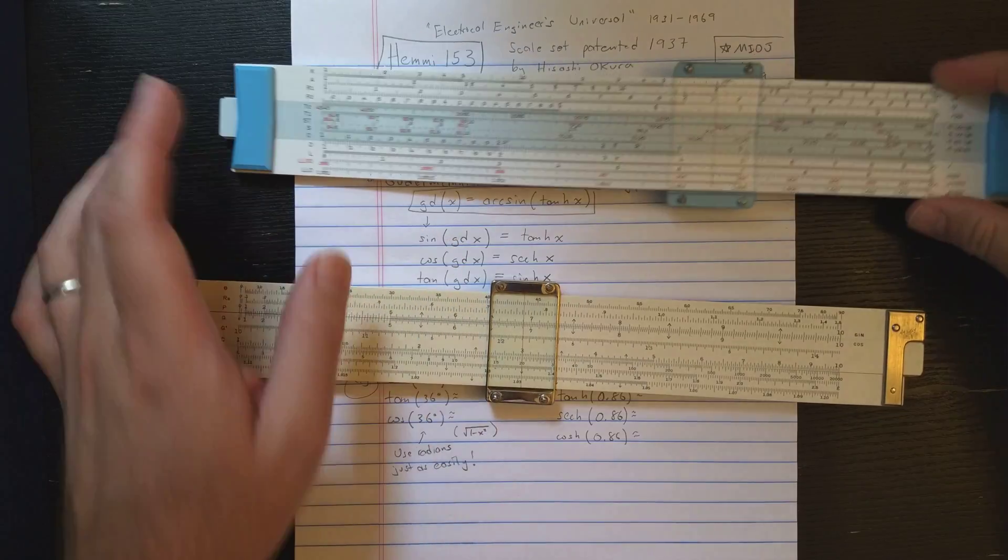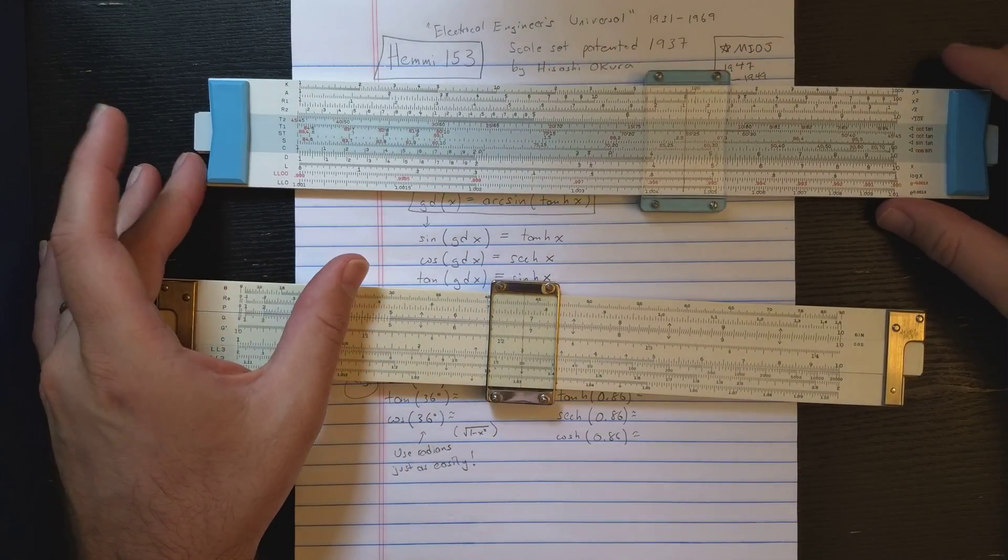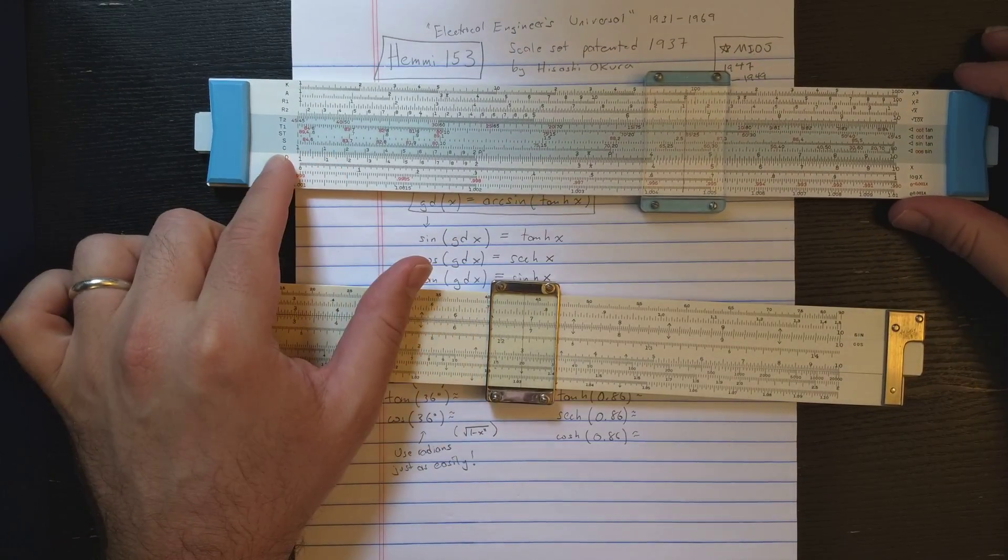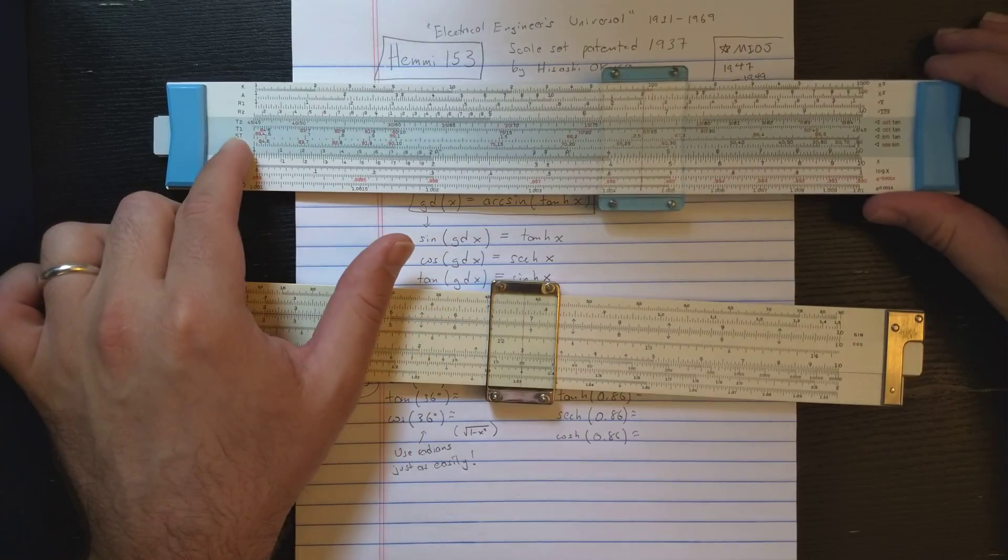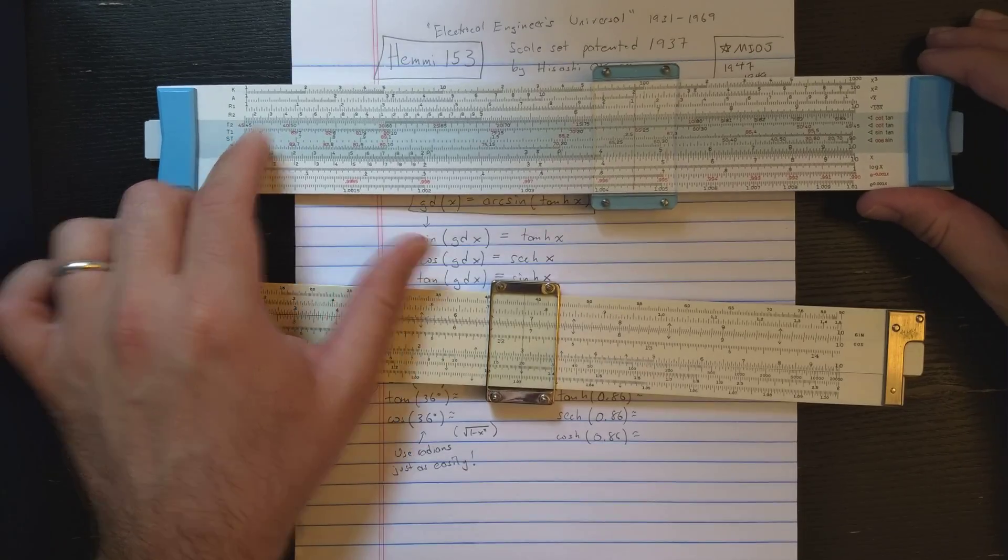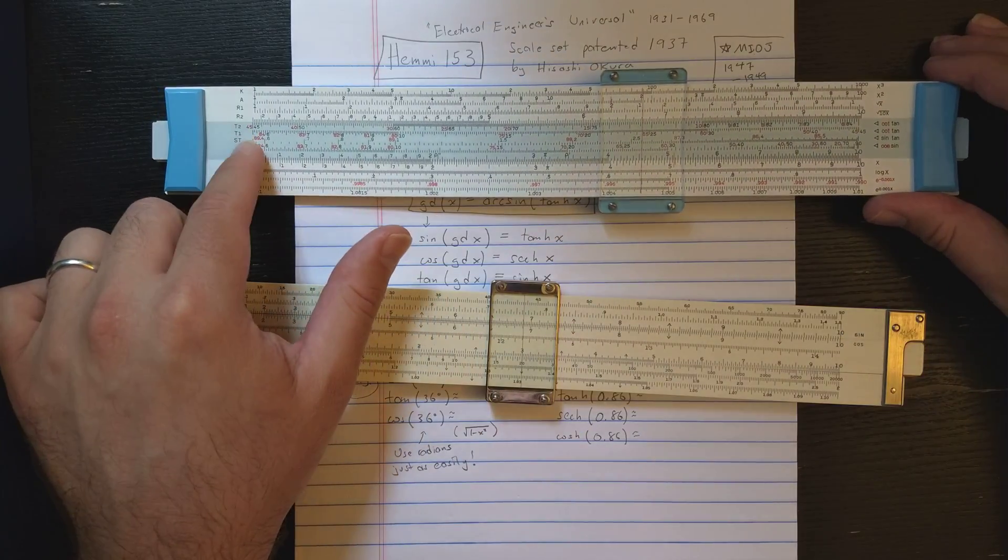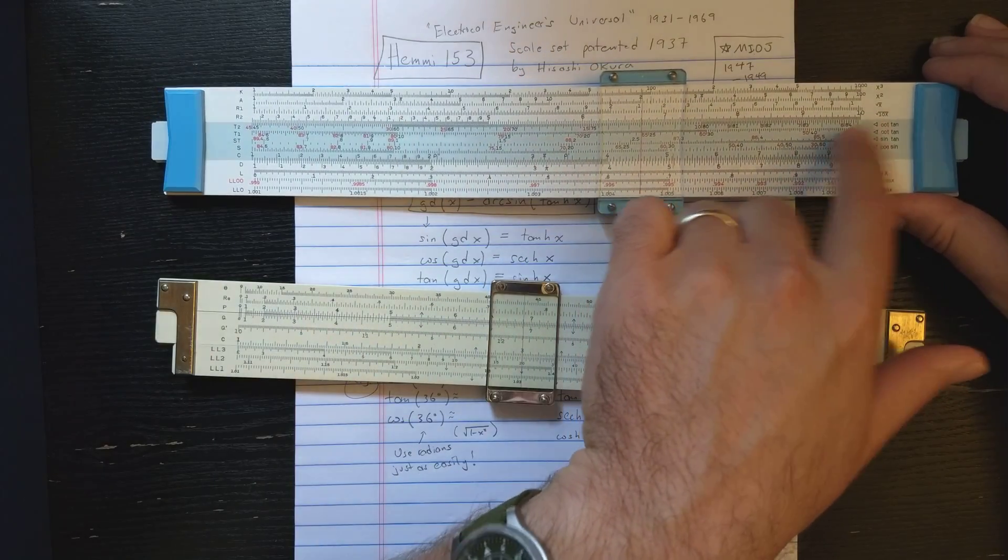So you have a very strange trigonometric setup. Just for comparison here, I have this later hemi slide roll with a pretty standard trig setup. Standard trig setup is at least S, ST in this T1 scale, which only goes from about 5.7 up to 45 degrees. This slide roll adds a T2, which goes from 45 to closer to 90, but it doesn't go all the way up to 90.